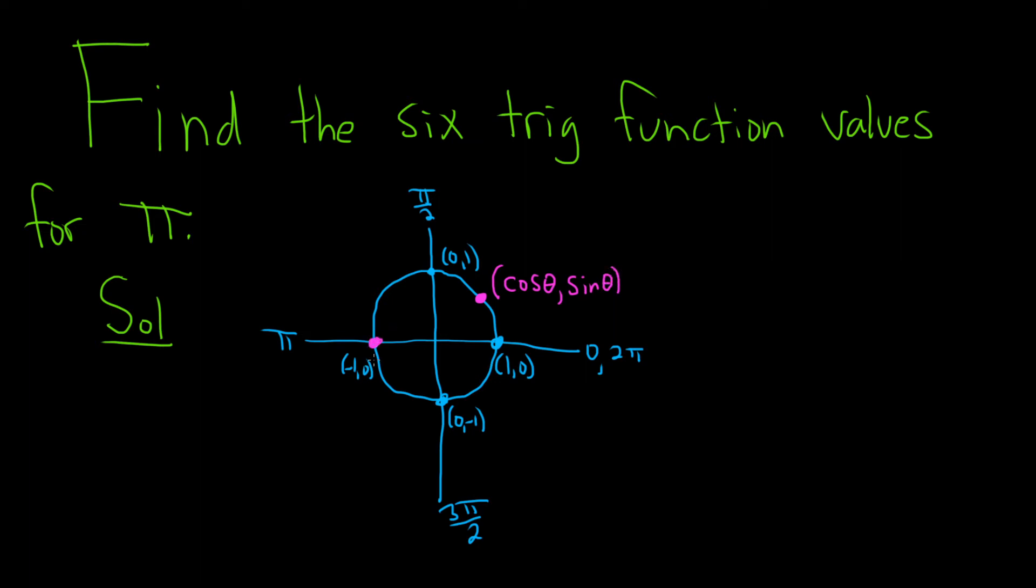So over here, the x-coordinate is negative 1, and the y-coordinate is 0. So that means that the cosine of pi is going to be negative 1. And the sine of pi is going to be 0, because it's the y-coordinate.